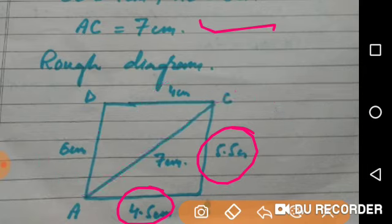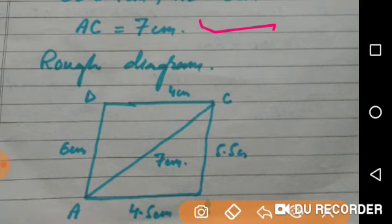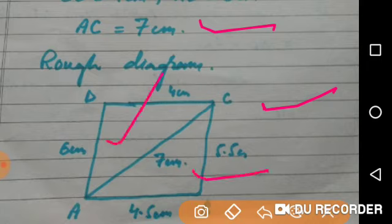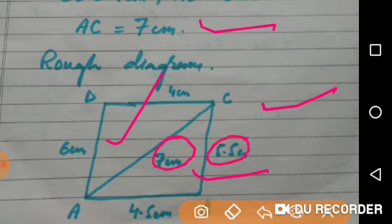If you look at this figure, you will find that to draw this quadrilateral you need to draw 2 triangles: triangle ABC and triangle ACD. And you know how to draw a triangle when all 3 sides are given, as you have done in earlier class 7th. So it will be easy to draw this quadrilateral with the help of these 2 triangles.